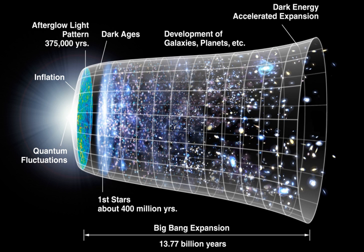English astronomer Fred Hoyle is credited with coining the term 'Big Bang' during a 1949 BBC radio broadcast, saying, 'These theories were based on the hypothesis that all the matter in the universe was created in one Big Bang at a particular time in the remote past.' It is popularly reported that Hoyle, who favoured an alternative Steady State cosmological model, intended this to be pejorative, but Hoyle explicitly denied this and said it was just a striking image meant to highlight the difference between the two models.